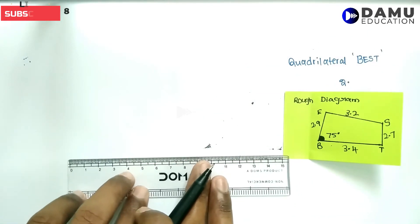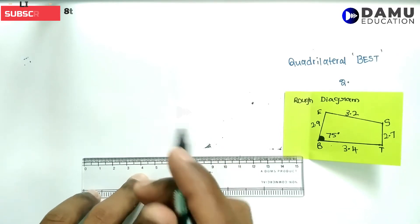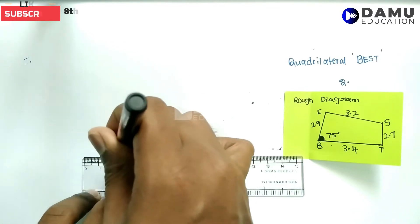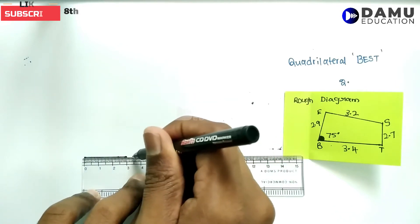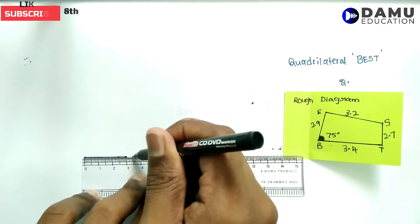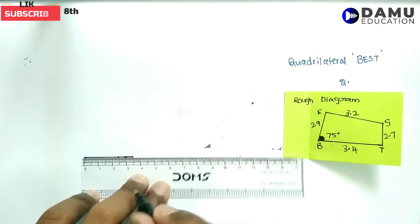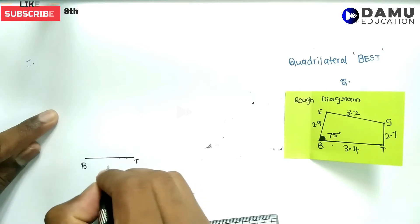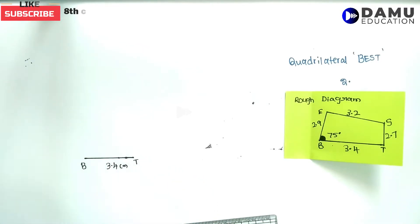Draw with 3.4 cm as the base. Keep your ruler and from 0, mark 3.4 cm — up to 3 cm, then 4 mm more. This is the actual sketch. BT = 3.4 cm.